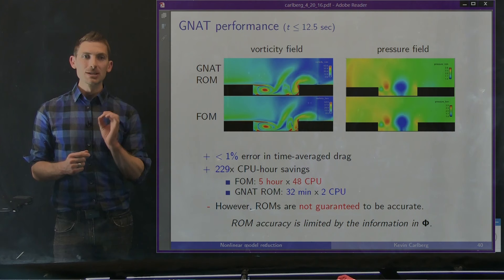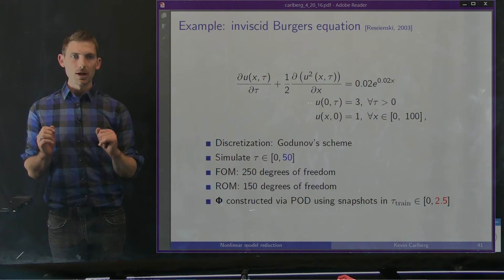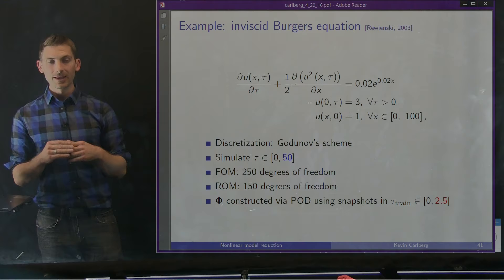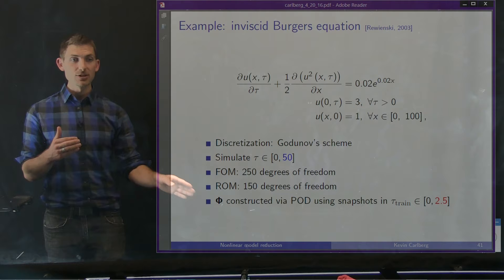I just showed a complex problem where reduced order models work. I'll now show a much simpler problem on which they fail. Let's consider the inviscid Burgers' equation in one dimension — a one-dimensional problem describing a shock propagating from left to right through a domain. We're going to simulate this for 50 seconds, which is enough to get the shock to move all the way out of the domain.